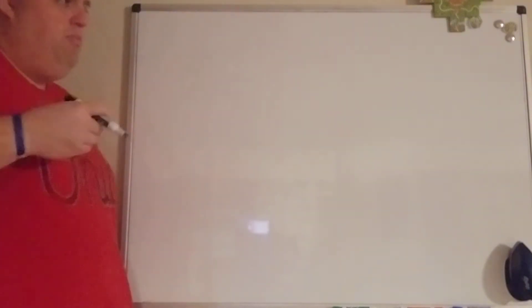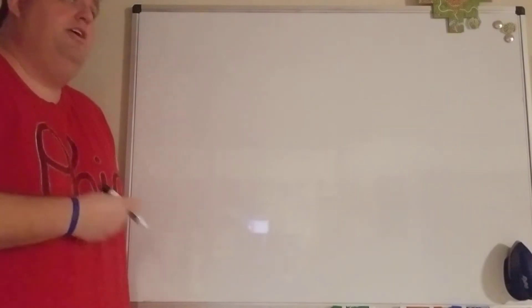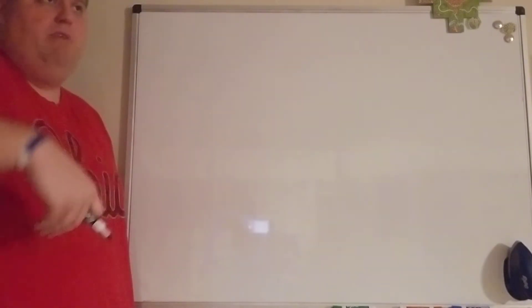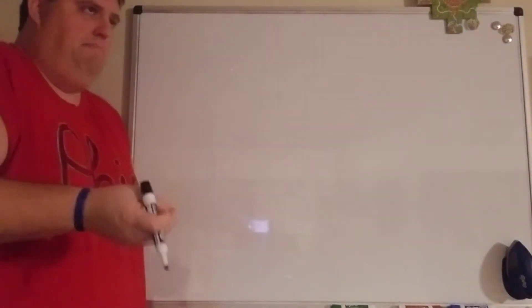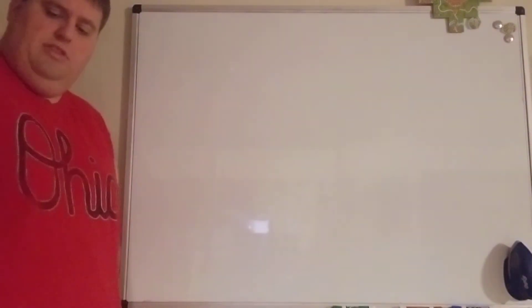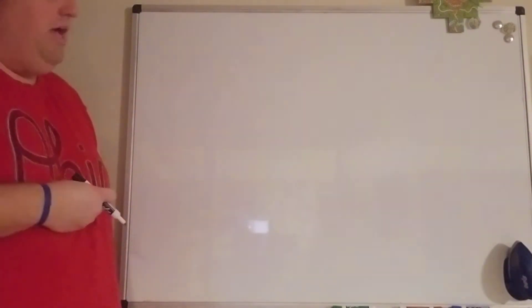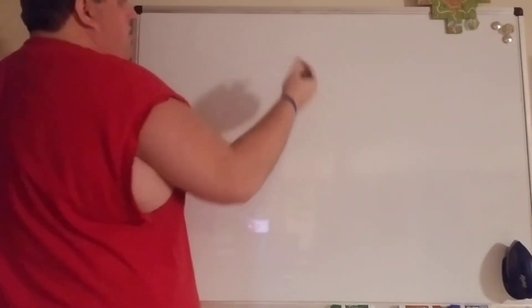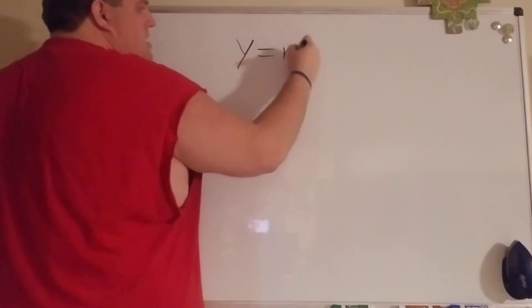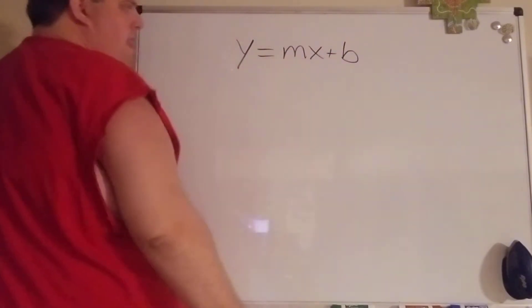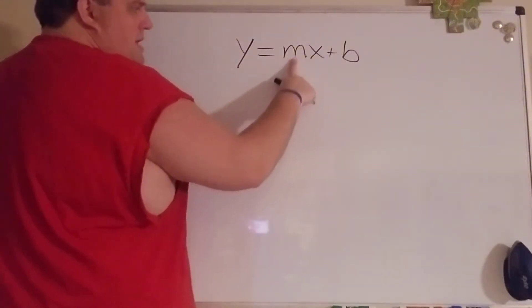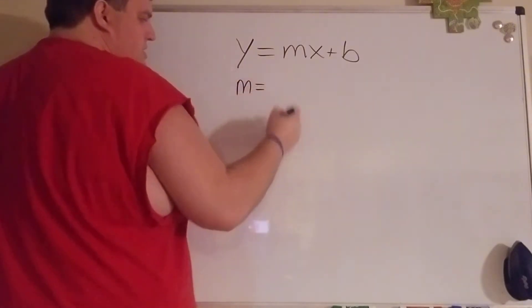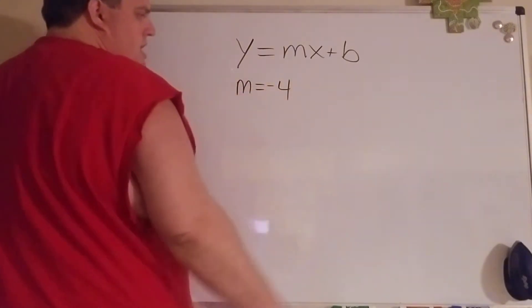We're going to just start off very simple today with writing an equation in slope intercept form if I give you the slope and a point. We talked about y-intercepts before, how they're the initial value, how they tell us where to start on our graphs, there always were x equals zero, but we didn't really solve for them.